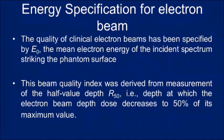For energy specification of electron beams, the nominal energy E0 is the label given to the beam (e.g., 6 MeV), but the actual measured energy may differ slightly. The beam quality index for electron beams is R50, the depth at which the electron beam depth dose is 50% of its maximum value — analogous to TPR20,10 used for photon beams.